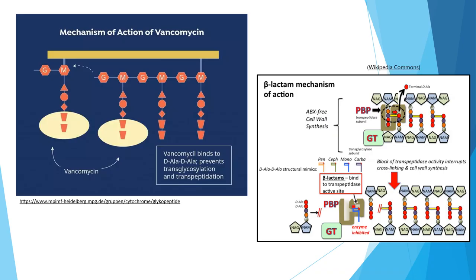Looking more closely at cell wall antibiotics: vancomycin binds to the D-alanine–D-alanine ends of the cell wall subunits, which prevents transglycosylation and transpeptidization between units, preventing cross-linking and addition of new subunits. Beta-lactam antibiotics also block transpeptidization, but they bind directly to the active site of the transpeptidase. So vancomycin blocks the D-alanine–D-alanine subunit while beta-lactams block the active site — both inhibit cross-linking.